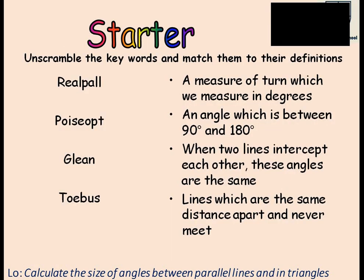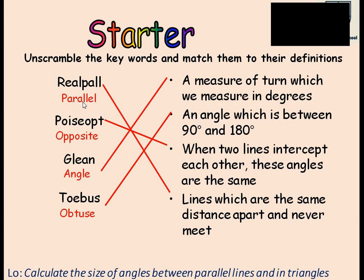Our starting point could be to define what an angle is. On the left we have some jumbled words and some definitions on the right that correspond to the words that can be formed out of the letters on the left. You might actually need to pause this video and quickly find a way to rearrange these letters so that they can match with the definitions on the right. It is clear that we can formulate the word 'parallel' from the combination of these letters, and also 'opposite' and 'obtuse'.